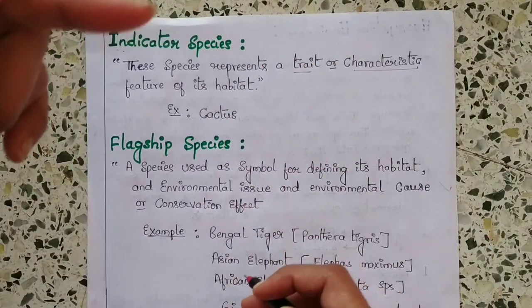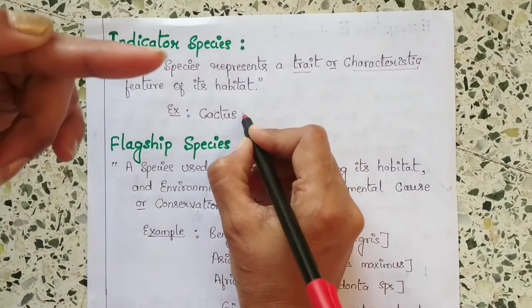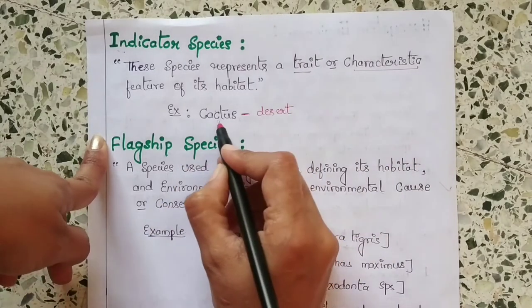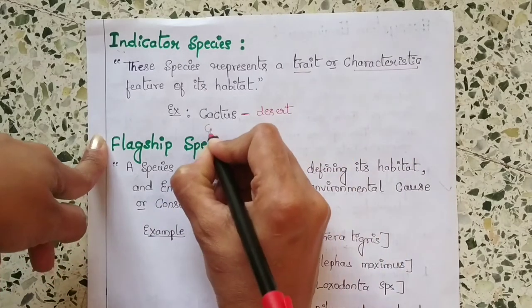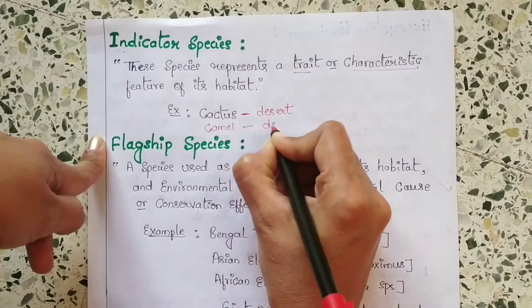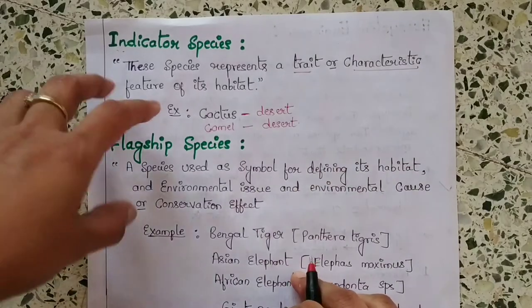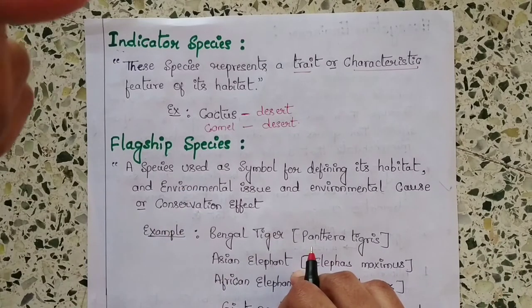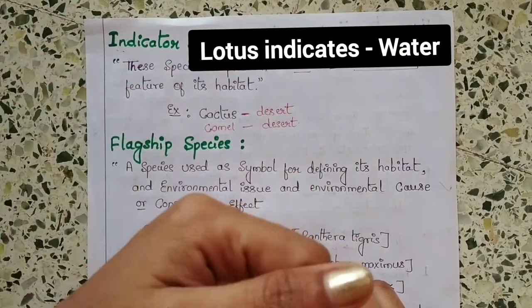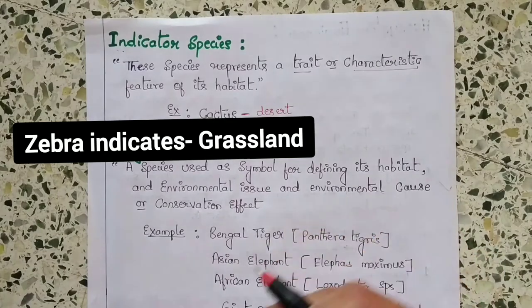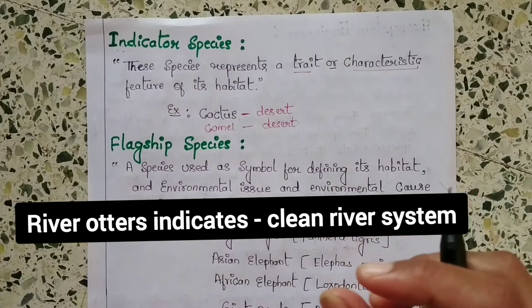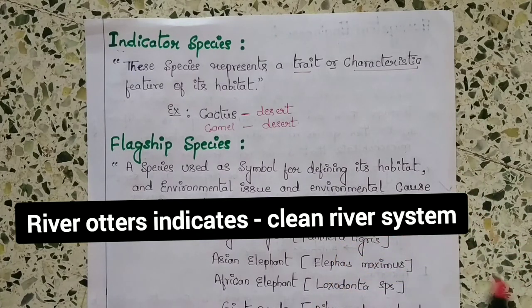For example, if you look at a cactus, you will remember the desert — cactus represents the desert. Similarly, a camel also indicates the desert. Other examples: lotus represents water, zebra represents grassland, mosses indicate acidic soil, and river otters represent a healthy clean river system.